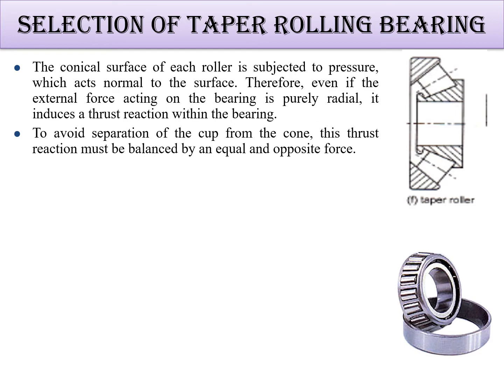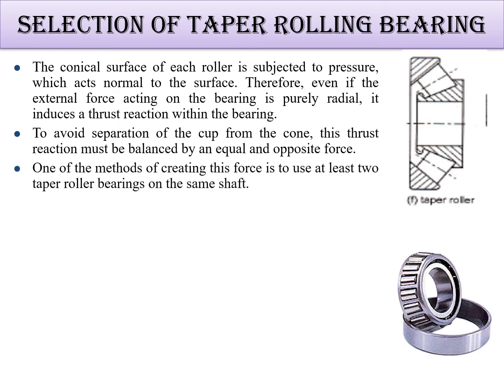To avoid separation of the cup from the cone, this thrust reaction must be balanced by an equal and opposite force. Even if the load is purely radial, the thrust reaction is present, and it is balanced due to the cone shape. One method of creating this balancing force is to use at least two tapered roller bearings on the same shaft.